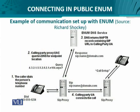Let's take an example of establishing a communication with ENUM between two hosts. Starting from the left-hand side, the caller dials the person's telephone number — for instance a US number: +1 202 555 1234. To utilize this as an ENUM DNS record, the number needs to be reversed and e164.arpa appended as a suffix.